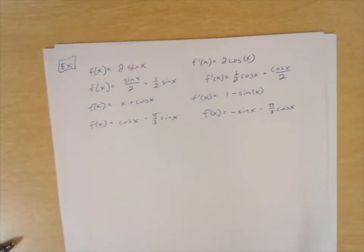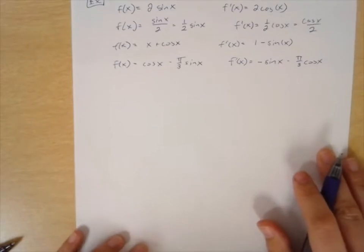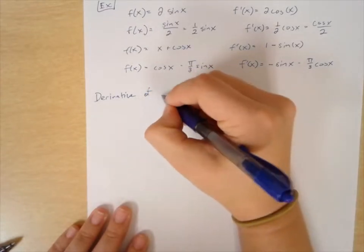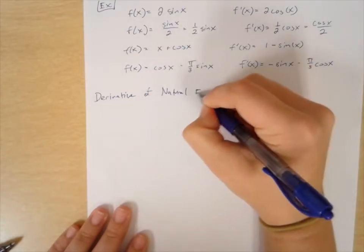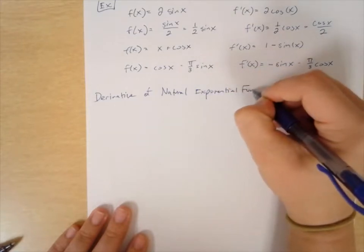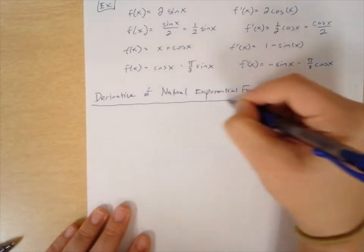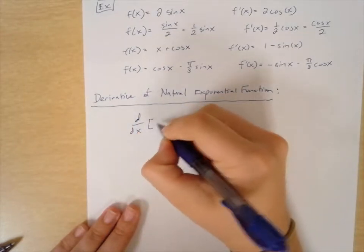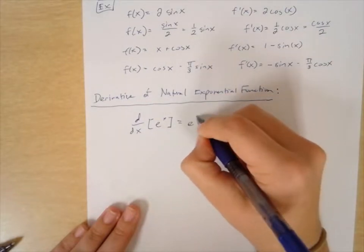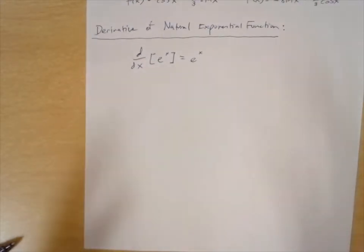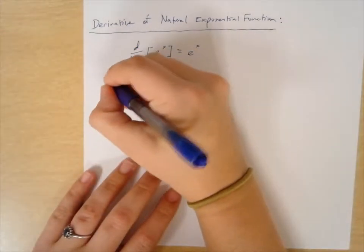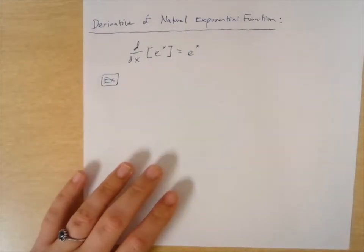Now let's talk about the derivative of the natural exponential function. The rule is that the derivative of e^x is just e^x — it doesn't change. We can go through the limit process another time, but this is a good rule to know going forward, just like all the other derivative rules. We can trust the mathematicians that came before us.